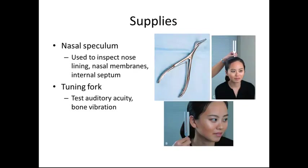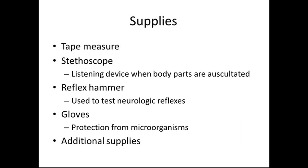The nasal speculum is used to inspect nose linings, nasal membranes, and internal septums. The tuning fork tests auditory acuity and bone vibration. The tape measure is used for head circumference, chest circumference, waist circumference, and — more recently — neck circumference for patients with sleep apnea. The stethoscope is used as a listening device to auscultate the heart, lungs, and sometimes the stomach. The reflex hammer tests neurological reflexes such as the patellar and Achilles reflexes. Gloves provide protection from microorganisms, along with additional supplies as ordered by the physician.